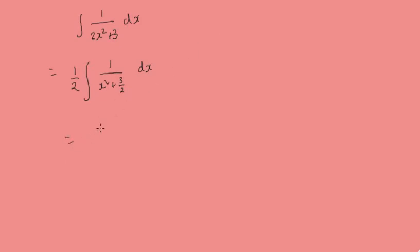And so that's going to give us a half. Now remember, this is a squared, so this will be the square root of a squared which is just a. So we need to take the square root of 3 over 2. So it's going to be 1 over the square root of 3 over 2, tangent inverse of x over square root of 3 over 2 plus c.